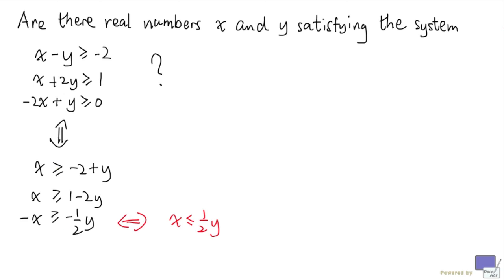And so this system can now be rewritten as x greater than or equal to minus 2 plus y, x greater than or equal to 1 minus 2y, and x at most one half y. So the first two inequalities are saying that x cannot be less than minus 2 plus y and cannot be less than 1 minus 2y. And the last inequality says x cannot be greater than one half y.